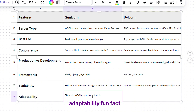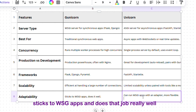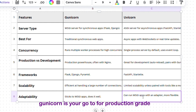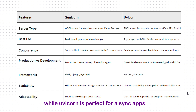Adaptability: Fun fact — Uvicorn can run WSGI apps with an adapter, so it's a bit more flexible. Gunicorn sticks to WSGI apps and does that job really well. These differences make it clear: Gunicorn is your go-to for production-grade synchronous apps, while Uvicorn is perfect for async apps, especially during development.